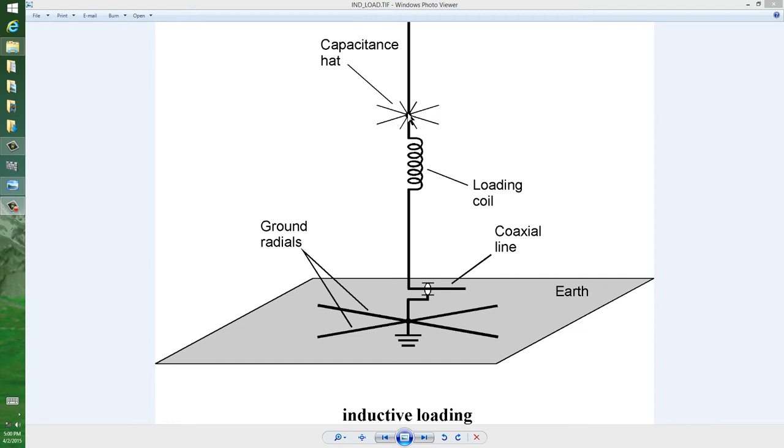The best place for the capacitance hat is anywhere in the upper half of the antenna. Of course, you need to be careful, because this thing will offer wind resistance.